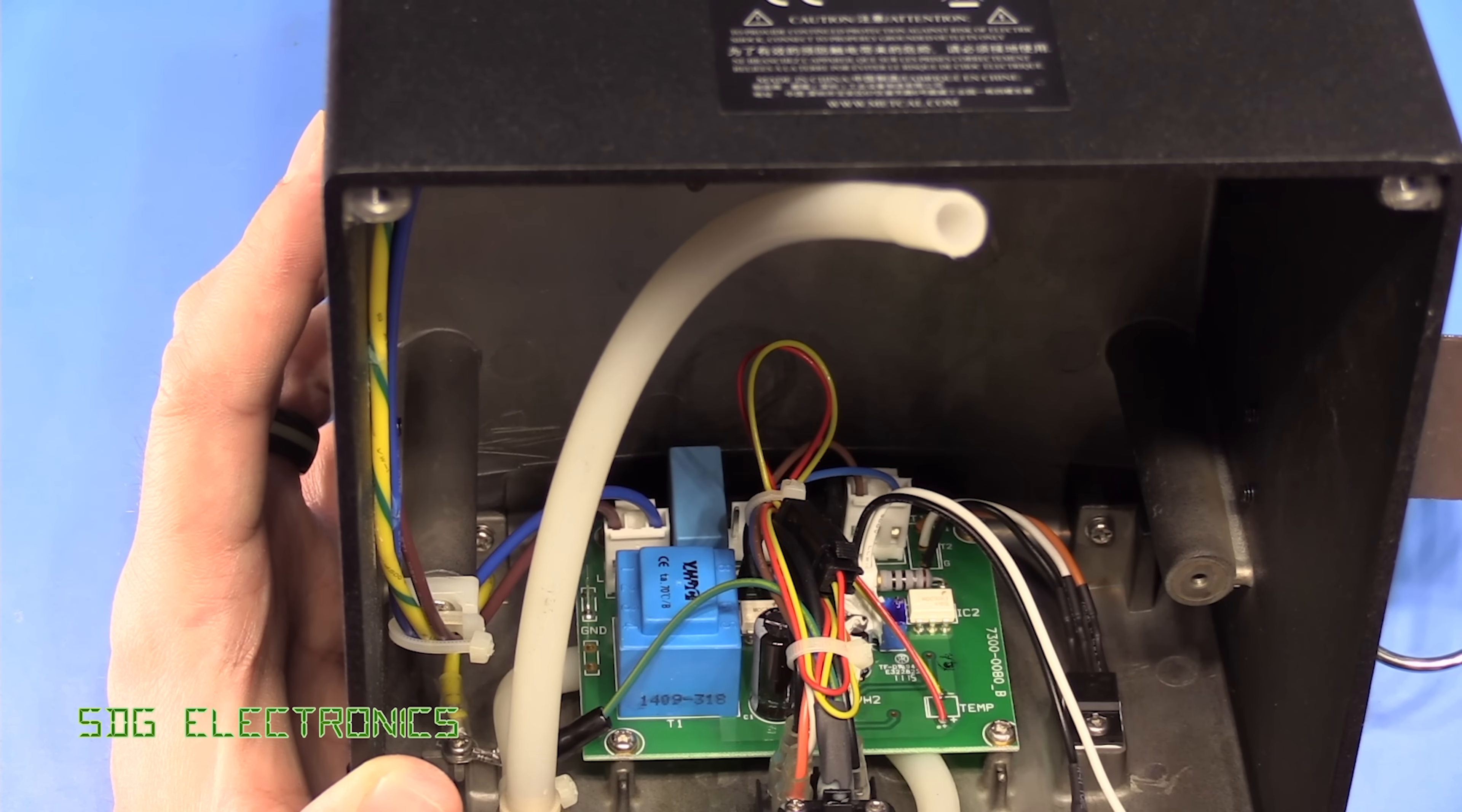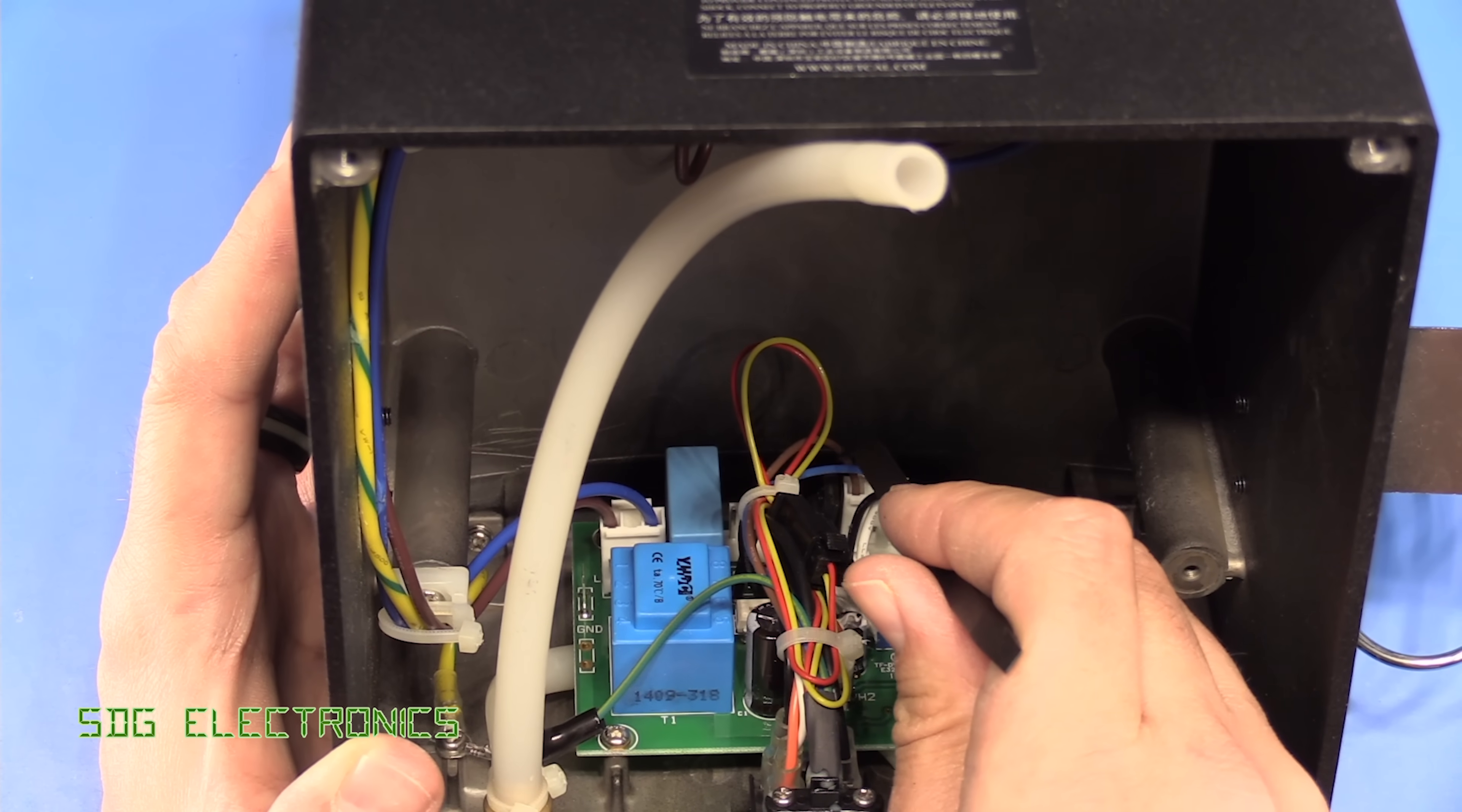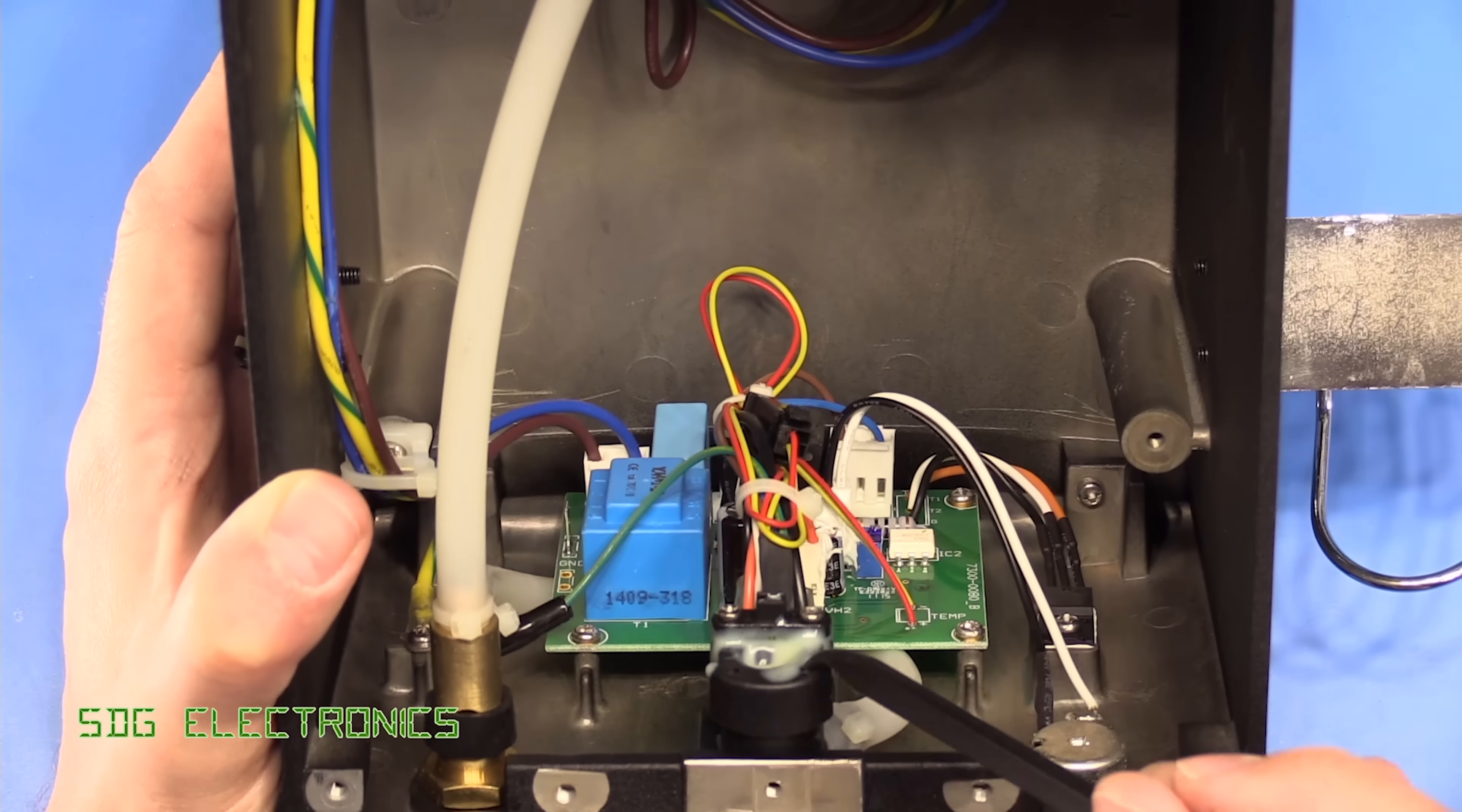And then on the PCB itself we've got the AC coming in, we've got a filter, big capacitor here as well for a bit of power factor correction. We've got a little transformer, we've got one connector at the back there that goes off to the pump, and then we've got a connector just here with those brown and blue wires that go off to the heater through the tubing. And then it looks like our temperature sensor is just on the yellow and red wire that also go through that tubing to the handpiece.